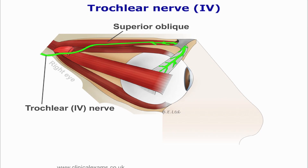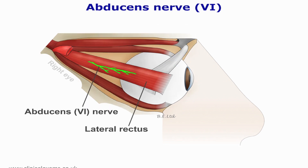For the purposes of this presentation, we will not distinguish between different lesions of these three cranial nerves. Their nuclei are found in the midbrain and pons areas. The trochlear nerve supplies the superior oblique muscle, and the abducent nerve the lateral rectus muscle.